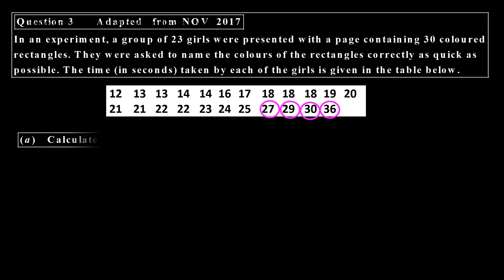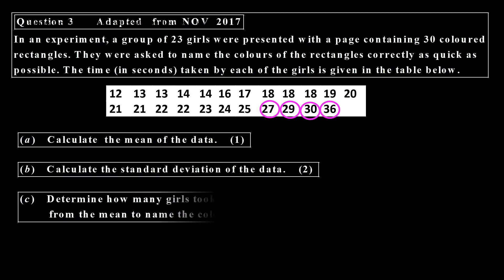Let's look at our third question. There we have our three questions. The mean of the data, calculate that is 20.52.